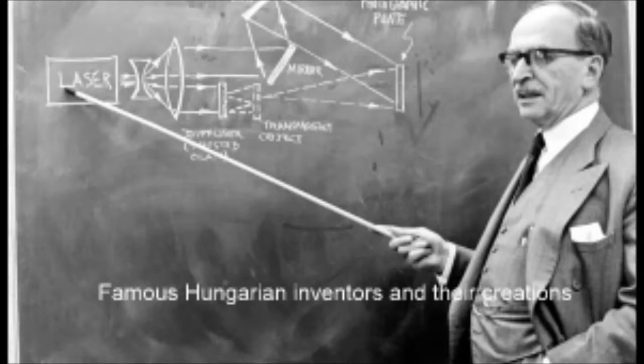In 1836, Janos Irinyi replaced potassium chlorate with another substance, lead dioxide, which works in the same way but is less explosive. Irinyi sold the invention to Istvan Roma, who set up the first commercial match factories, and these were a great success.